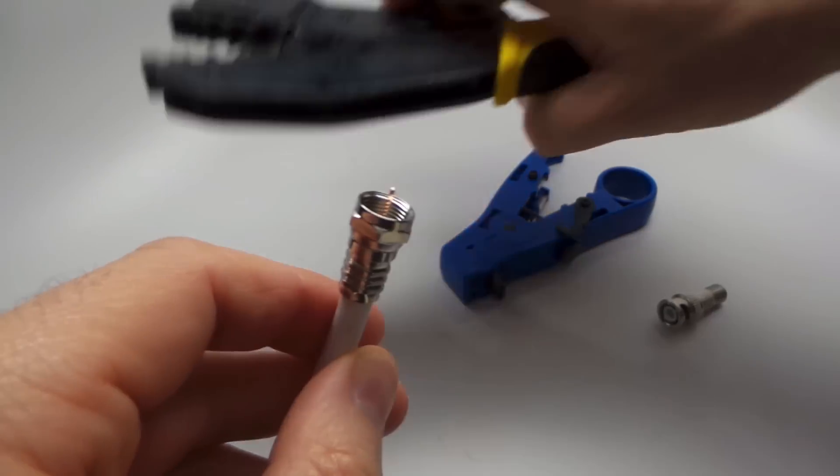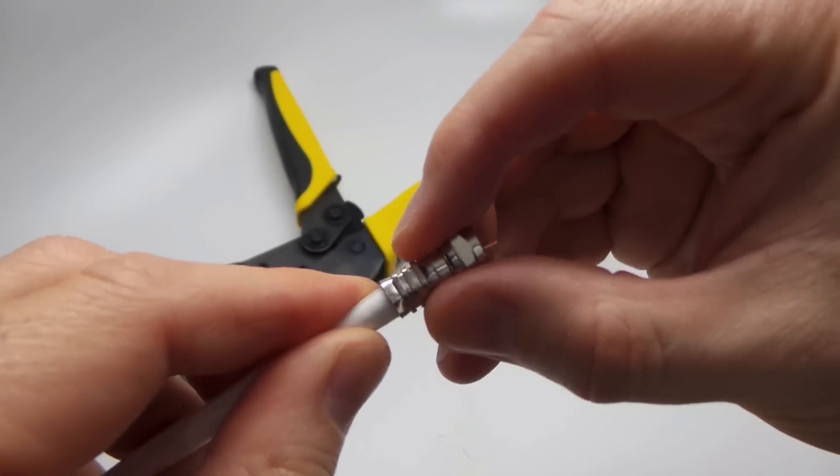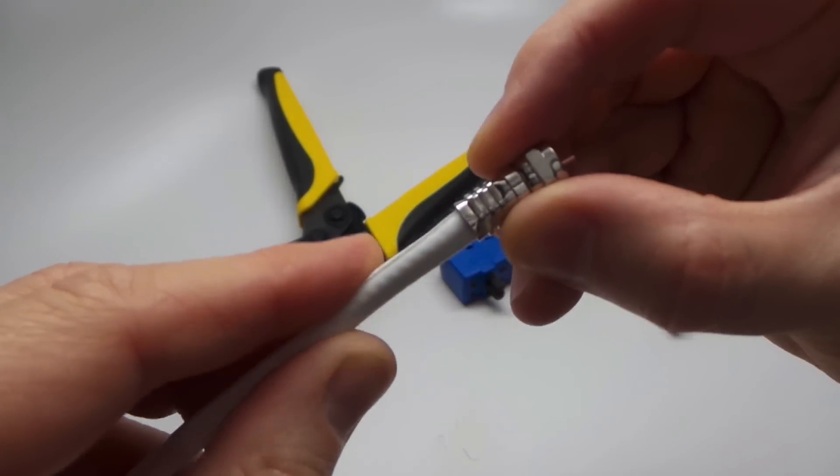And then when it's all the way ratcheted, it will release. And then you should have a nice, snug F connector connection. Give it a couple of tugs just to confirm.